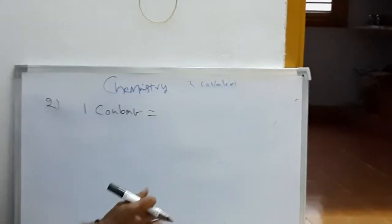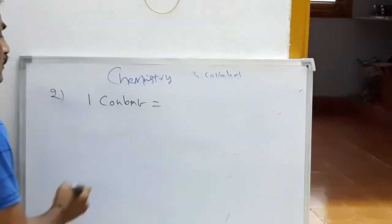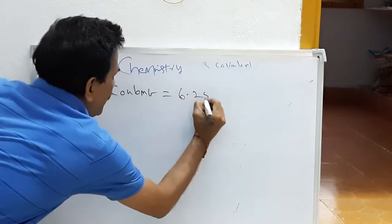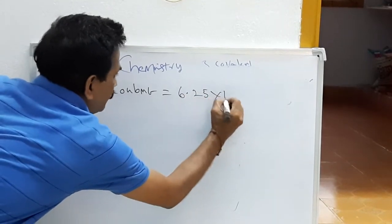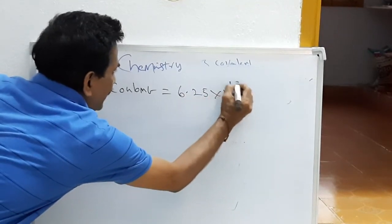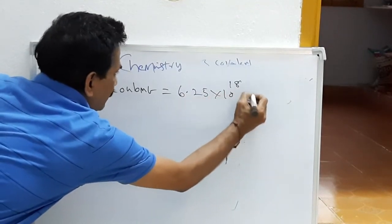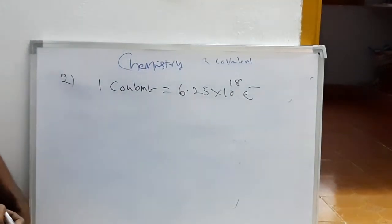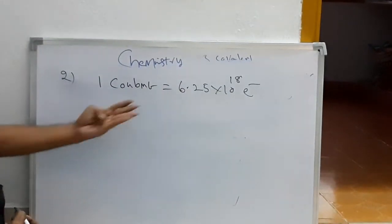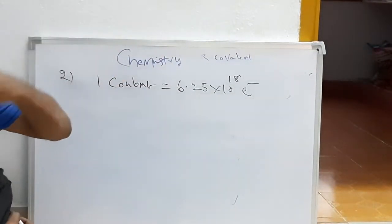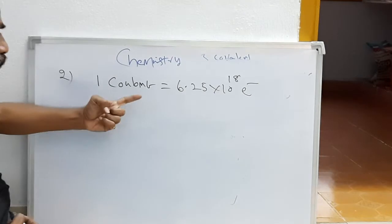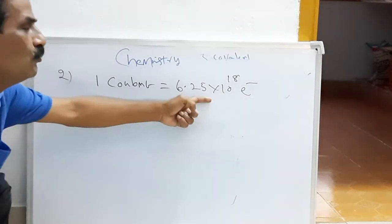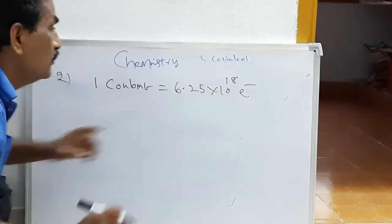How many electrons are in one coulomb? One coulomb is equal to 6.25 into 10 to the power of 18 electrons. This is a most important fact for competitive exams. How are you going to calculate that? One coulomb is 6.25 into 10 to the power of 18 electrons.